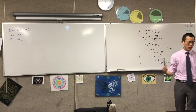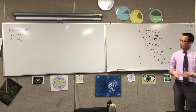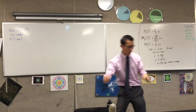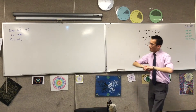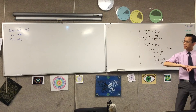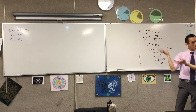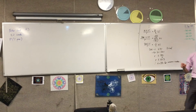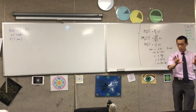Part A is just asking, what's the probability of one pair? One pair. So that's like getting a pair of threes and then some other random cards, or a pair of queens and a bunch of other random cards.